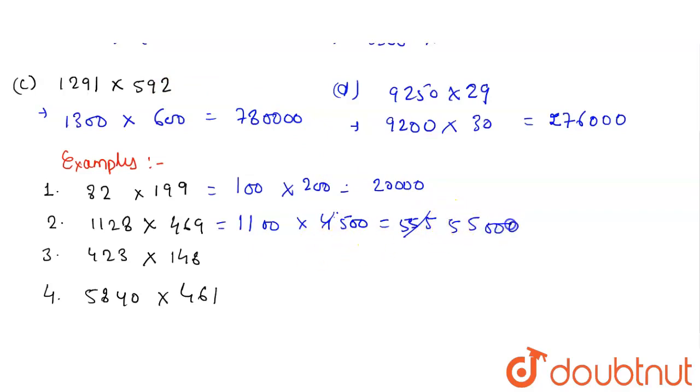In the third example, 423 would be equal to 400, and 148 would be 500. Its approximation would be 400 into 500, which is 200,000. In the last part, 5840 would be 5800 multiplied with 500. This would give us the result 2,900,000. These are the estimated products and four examples at the end. Thank you.